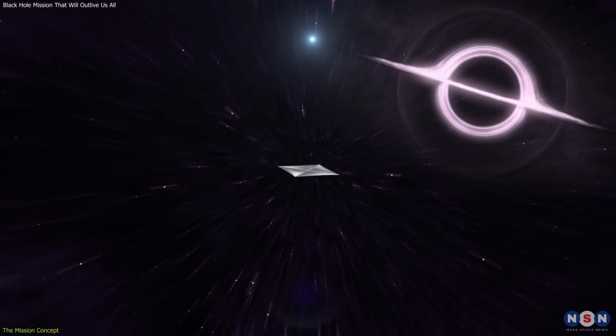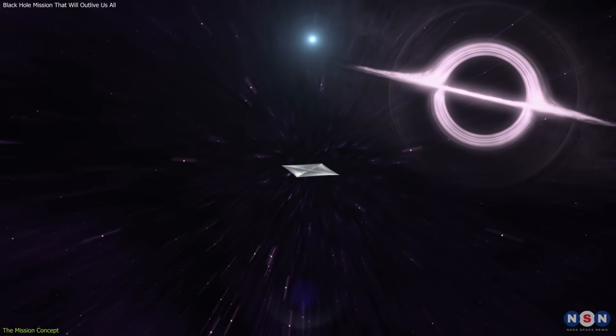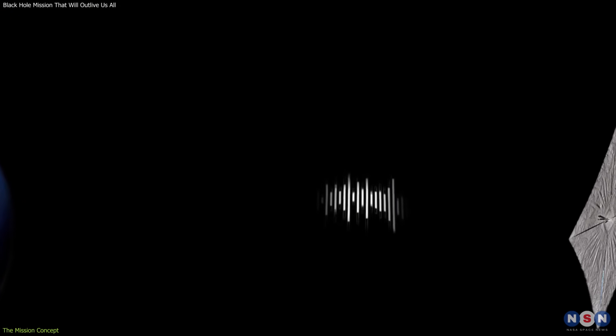At that velocity, a black hole 20-25 light years away could be reached in about 70 years. The probe's data, traveling at the speed of light, would return to Earth in about 20 more years.